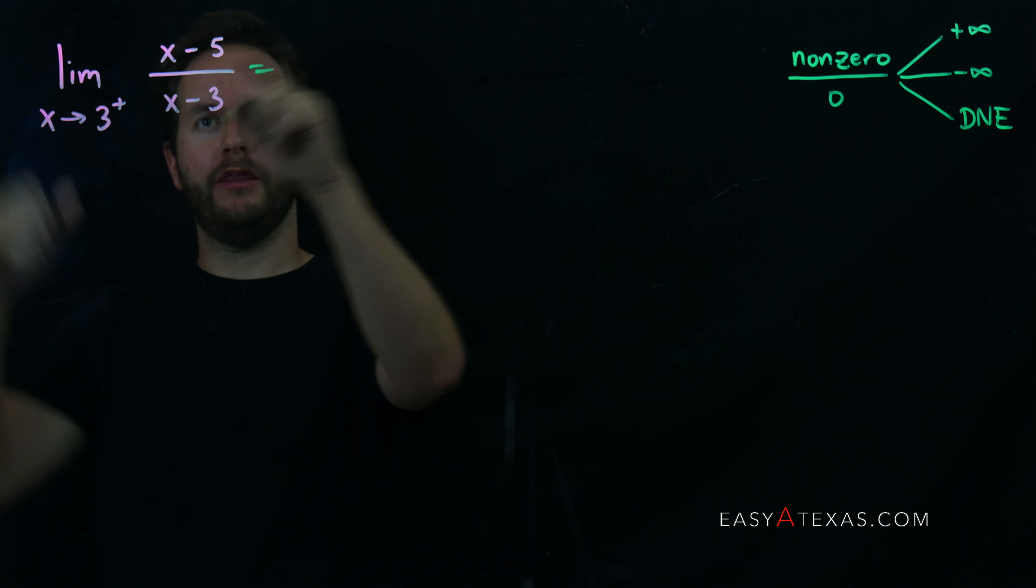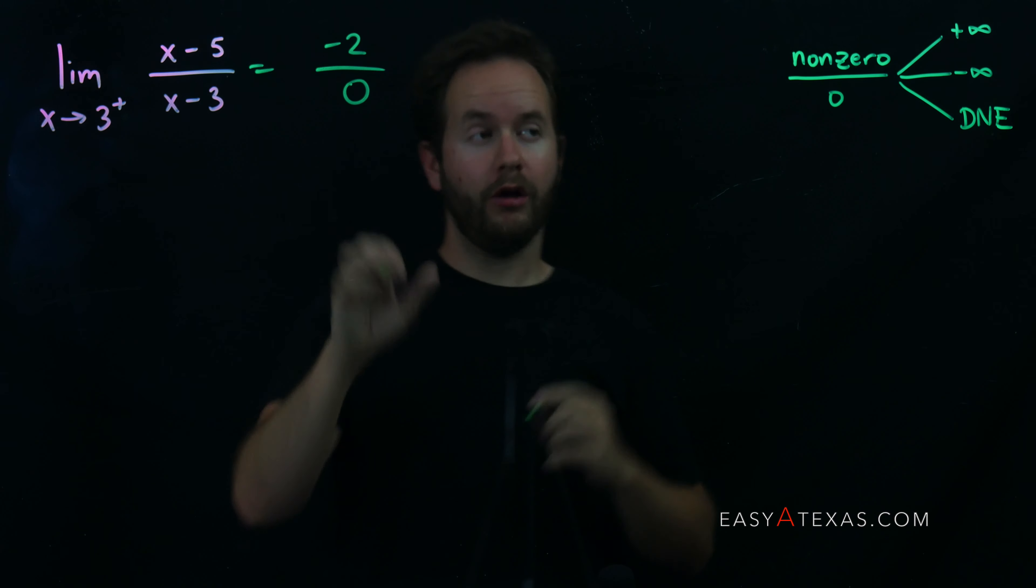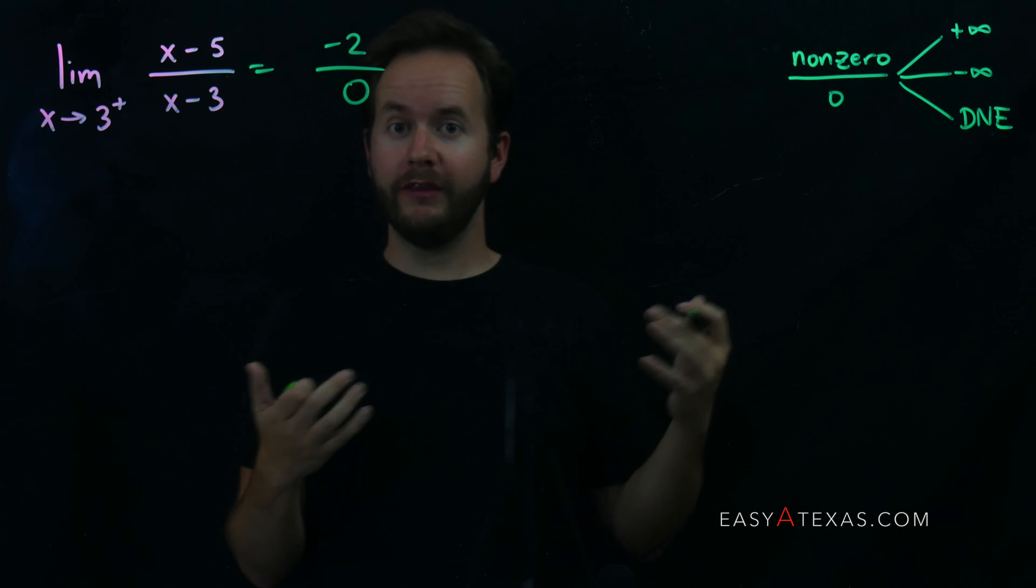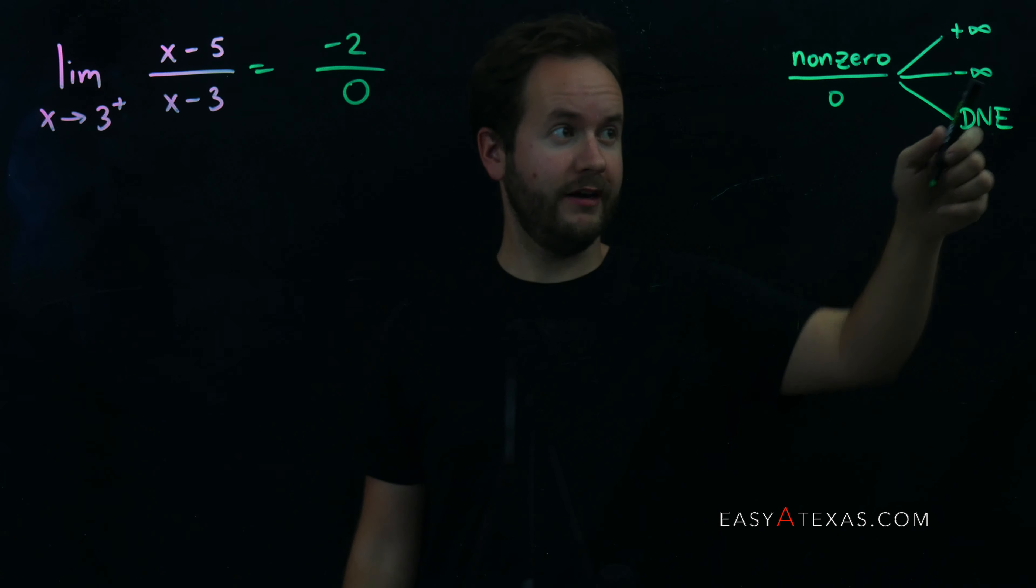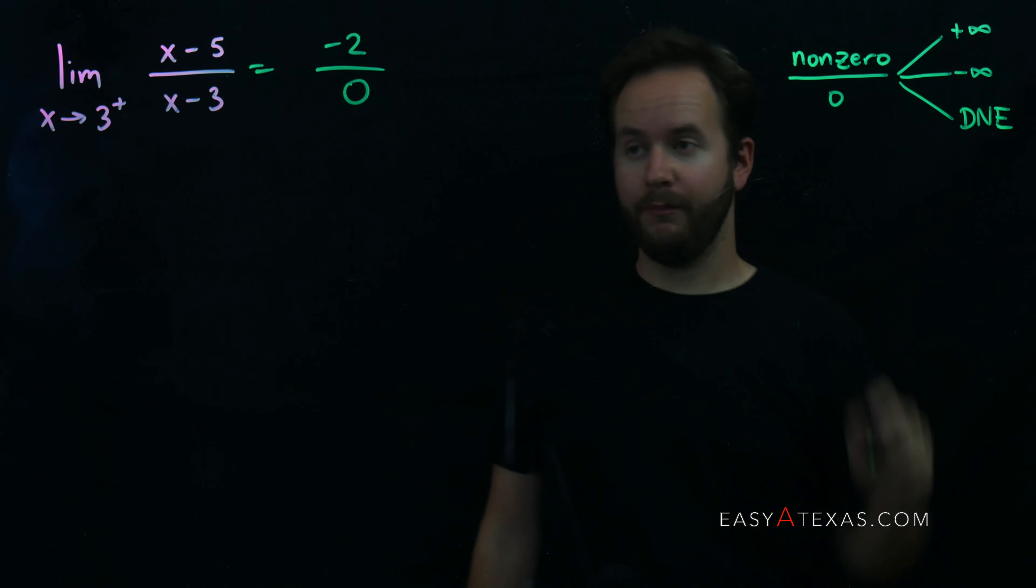When I plug in 3, I get 3 minus 5 is negative 2, 3 minus 3 is 0. This particular form is what I call non-zero over 0. When you get this result, your answer is going to be infinity, negative infinity, or DNE, which stands for does not exist. We need to figure out which one it's going to be.